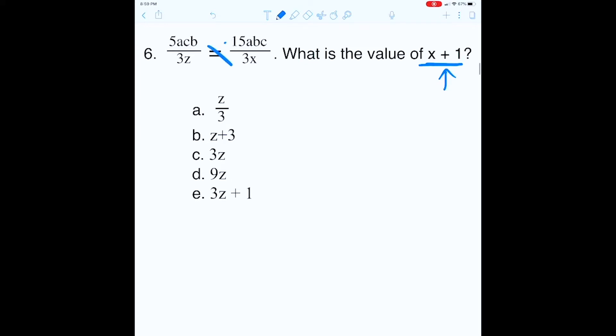And so what we can do is we can cross multiply here, and we have 5ACB times 3x. 5 times 3 is 15. ACB I'm just going to write as ABC, okay? And then we have our x.